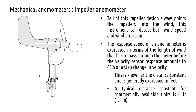This type of anemometer has a parameter called the distance constant, expressed in feet — typically 6 feet. This means 6 feet of air must pass through the meter before the velocity response changes by 63 percent, analogous to a capacitor charging curve. That is, when there is a step change in velocity, say from 50 to 55, if 6 feet of air passes through, the rise will be at least 63 percent.